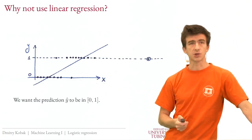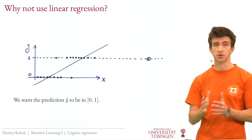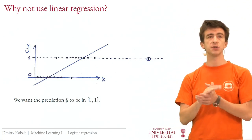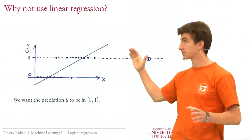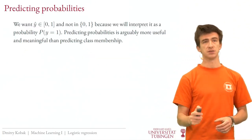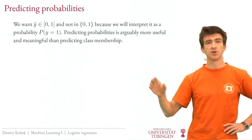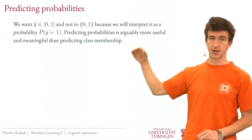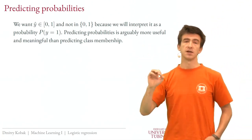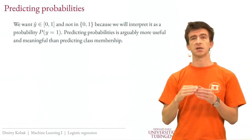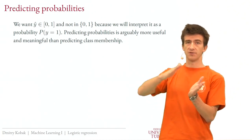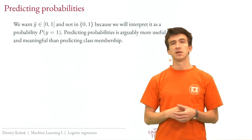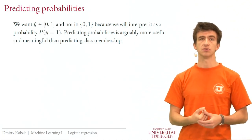That illustrates why it's not a good idea to use linear regression, even though in some cases it might work fine. We want something else: a model that predicts ŷ to be between 0 and 1, not outside. And why between 0 and 1? Because we want to interpret the prediction as a probability that the sample belongs to class 1. The predicted values can vary continuously from 0 to 1.